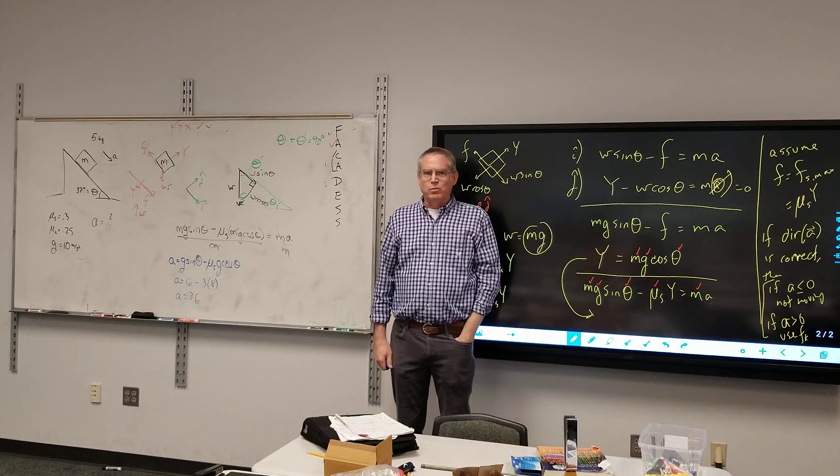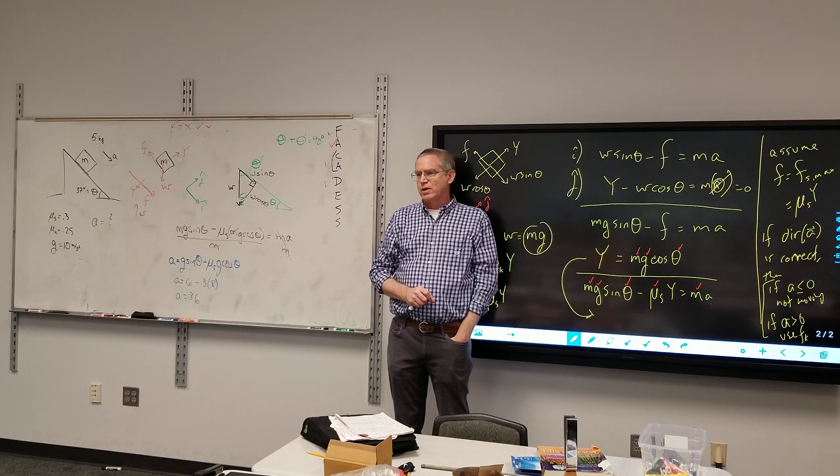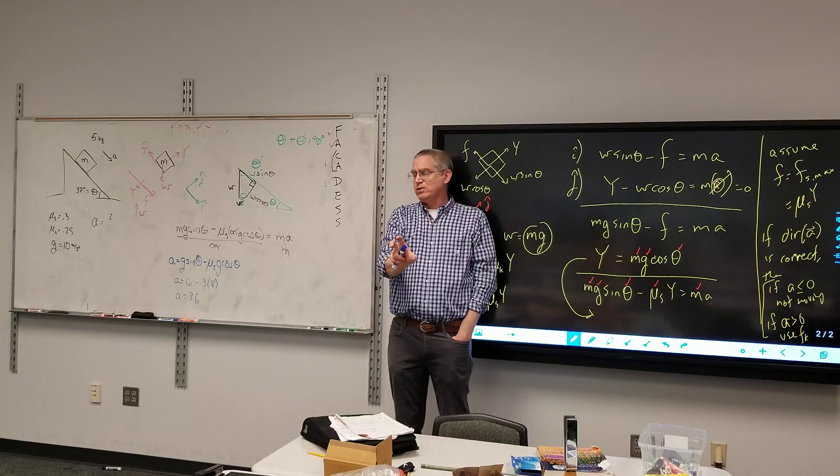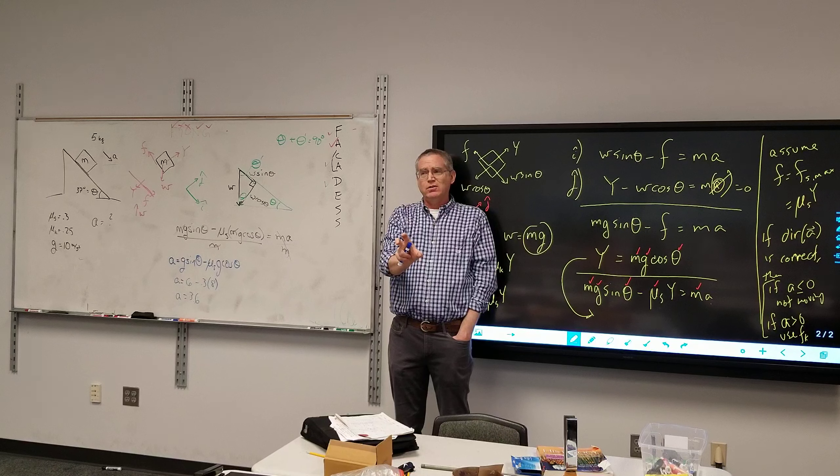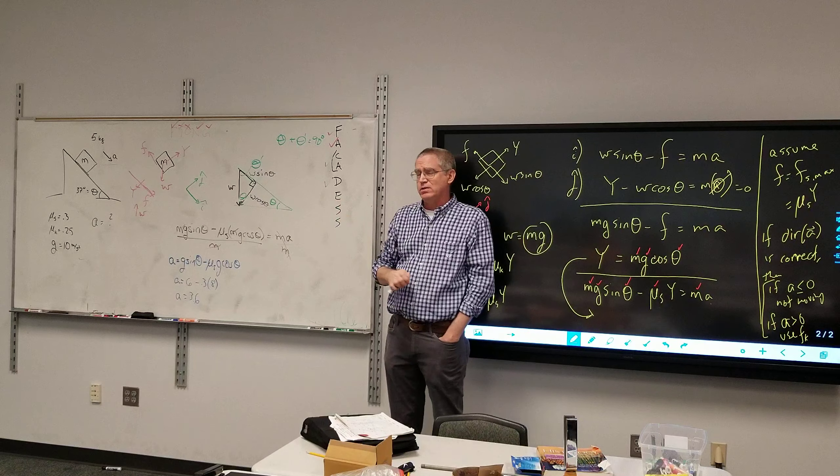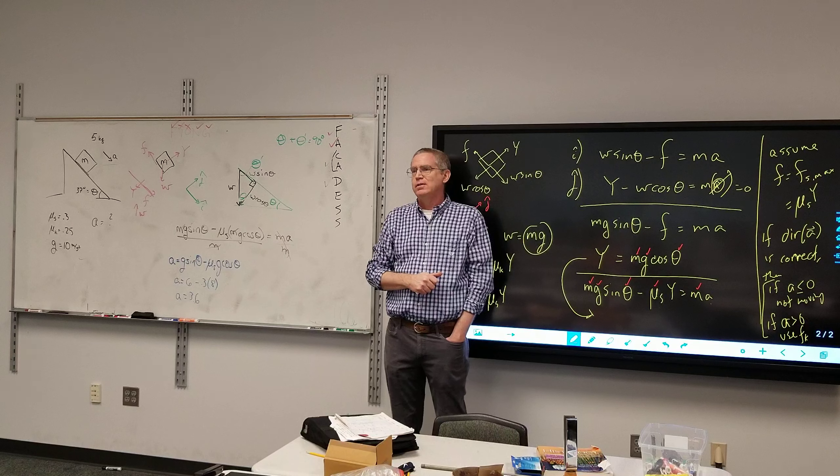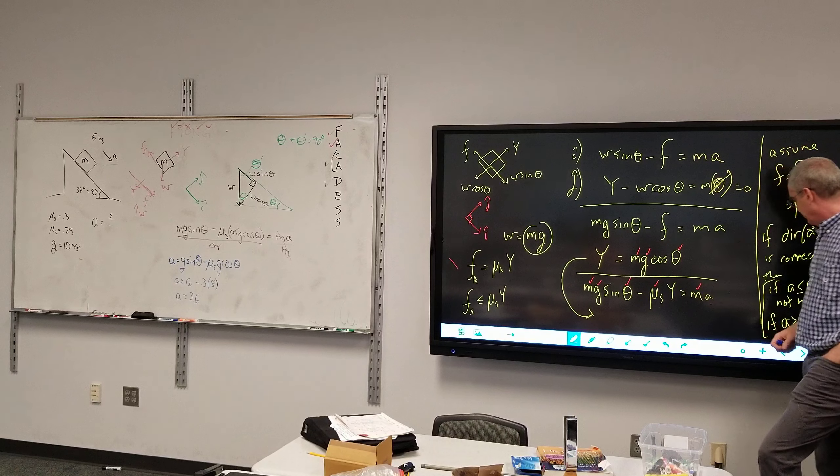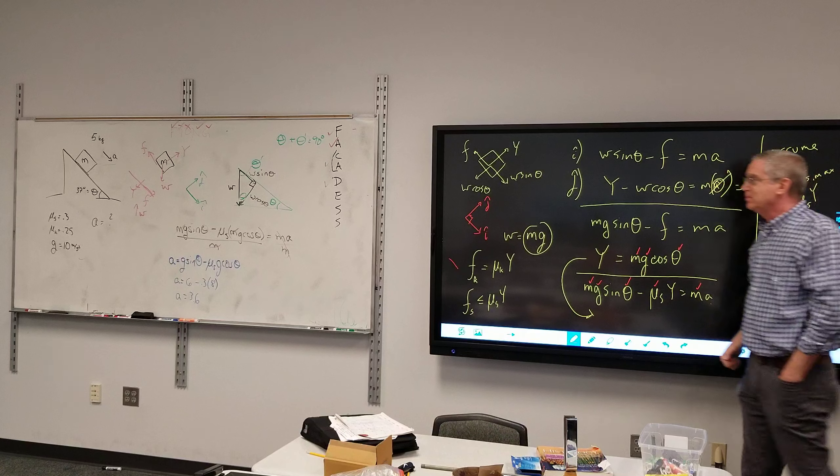If we are done here, we're saying the acceleration of this object is down the ramp at 3.6 meters per second squared. But if it is moving down the ramp with an acceleration of 3.6 meters per second squared, it's moving. So using the static coefficient is not appropriate. We need to use the kinetic friction. So we do the same problem.